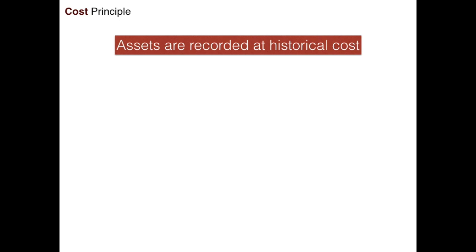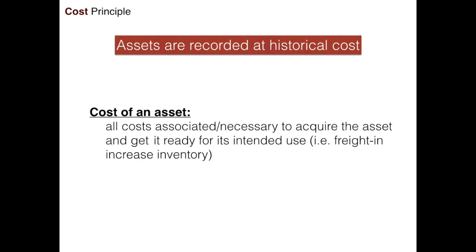Typically that's what we pay for an asset, but there can be a few other things involved with this idea of cost. The cost of an asset is really the costs that are associated with or necessary to get the asset ready for its intended use. That includes the cost to acquire the asset as well as any cost to get it to you, like freight in. Anything that gets that asset ready for its intended use would be included as the historical cost recorded on the books.